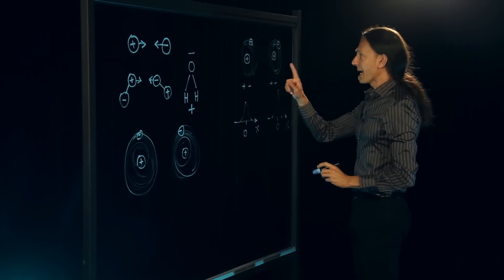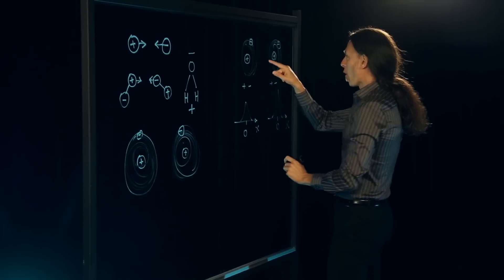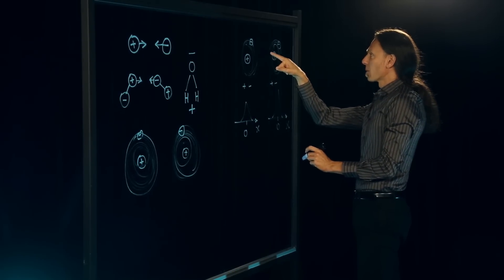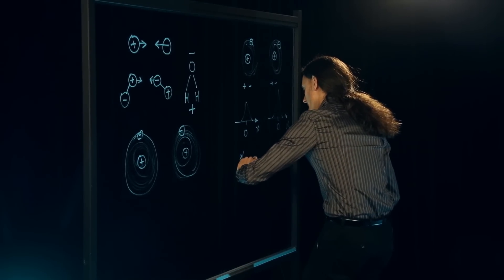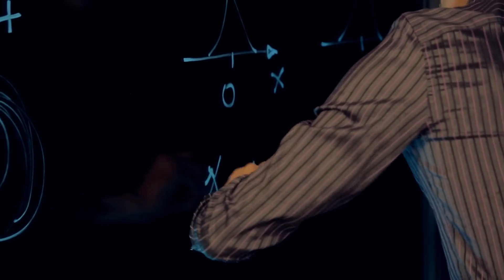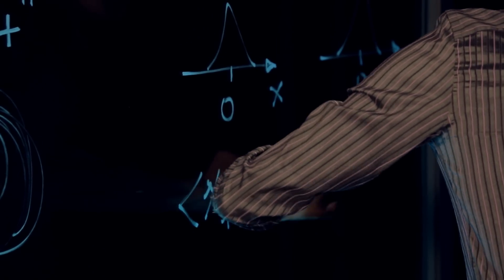But if you calculate the product of the position of electron number one and the position of electron number two, so x1 times x2, on average, is non-zero,